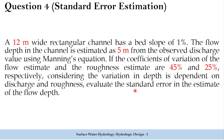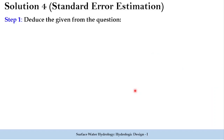The coefficient of variation of the flow estimate is 45 percent and the coefficient of variation of roughness is 25 percent. For these given variations, we need to evaluate how the standard error will accumulate. Let us first identify the given elements from the problem.